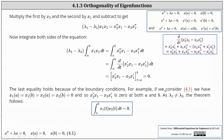This last equality is true because of the boundary conditions. For example, if we consider problem 4.1 shown below, which has conditions x(a) equals zero and x(b) equals zero, then x1(a) equals x1(b) equals x2(a) equals x2(b) equals zero. Therefore big F of b minus big F of a must be zero, meaning x2 prime x1 minus x2 x1 prime is zero for both a and b. Since lambda 1 does not equal lambda 2, the theorem follows: the integral from a to b of x1(t) times x2(t) dt equals zero.